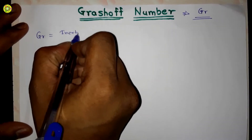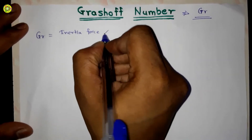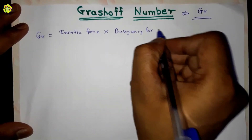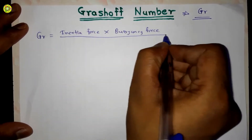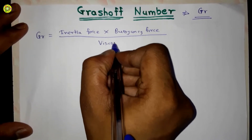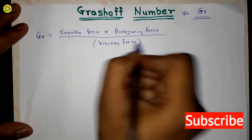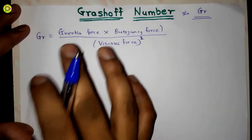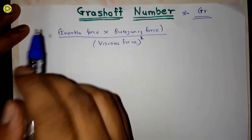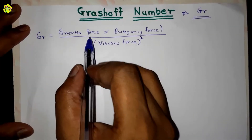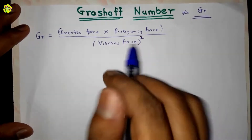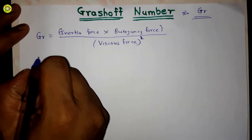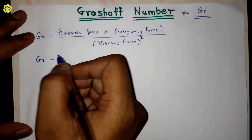The Grashof number is defined as the ratio of the product of inertia force and buoyancy force to the square of viscous force.